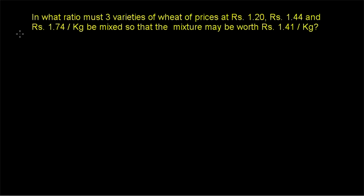Hi friends, welcome to today's class. Today's question is: in what ratio must 3 varieties of wheat priced at Rs 1.20, Rs 1.44, and Rs 1.74 per kg be mixed so that the mixture may be worth Rs 1.41 per kg?